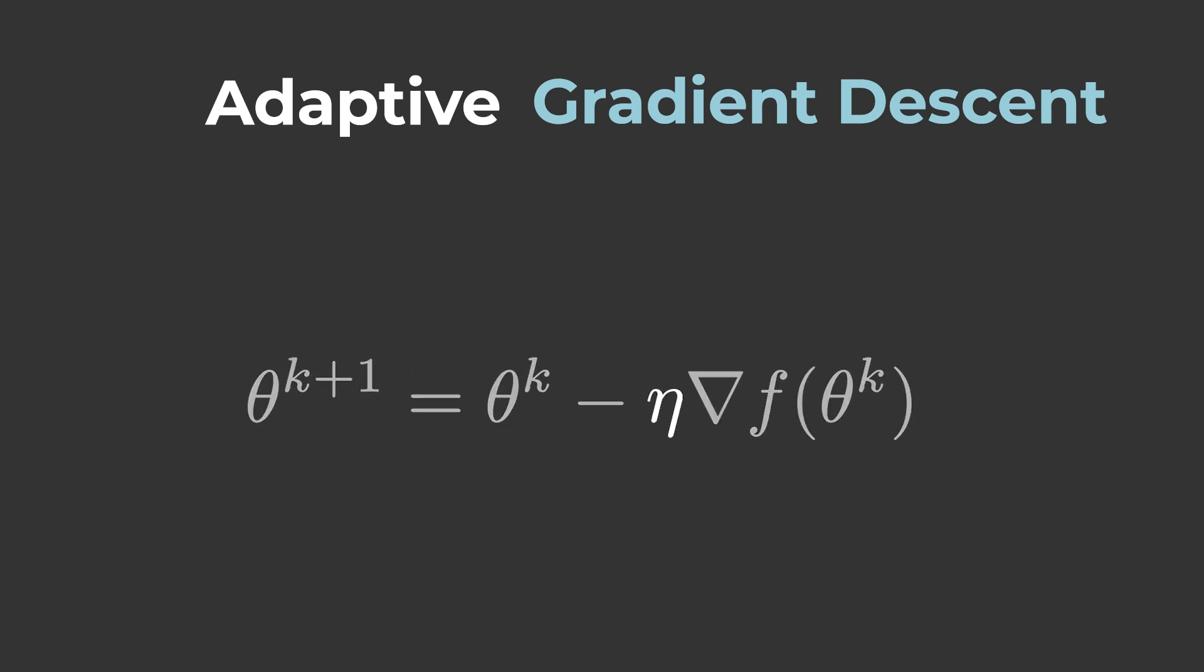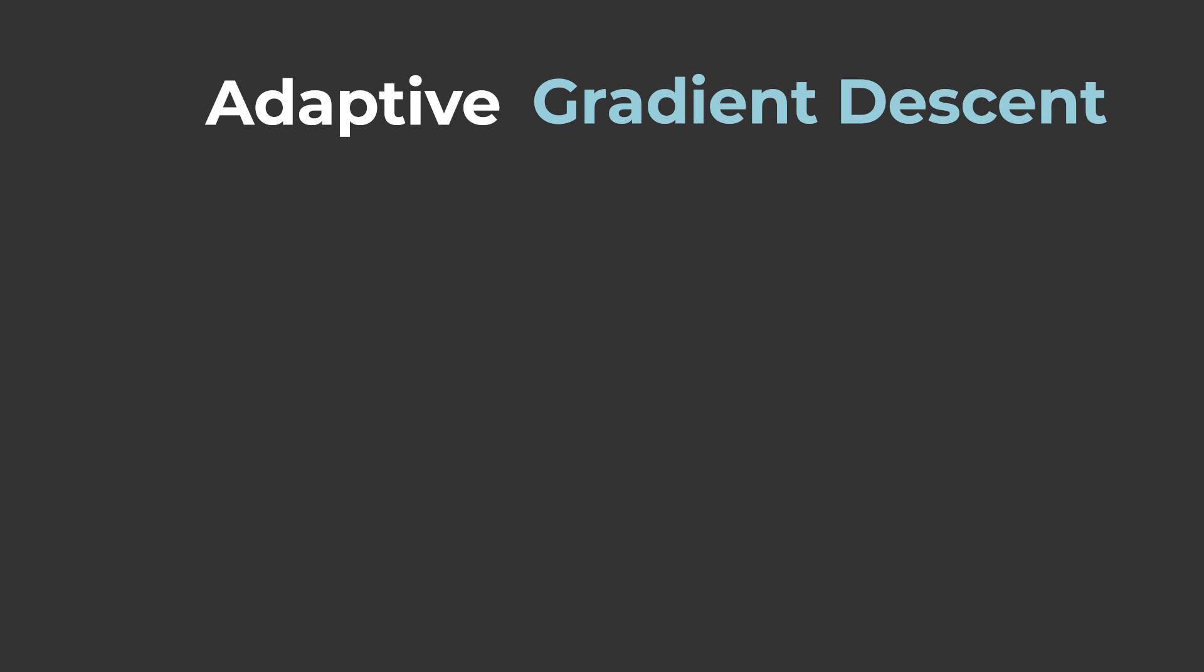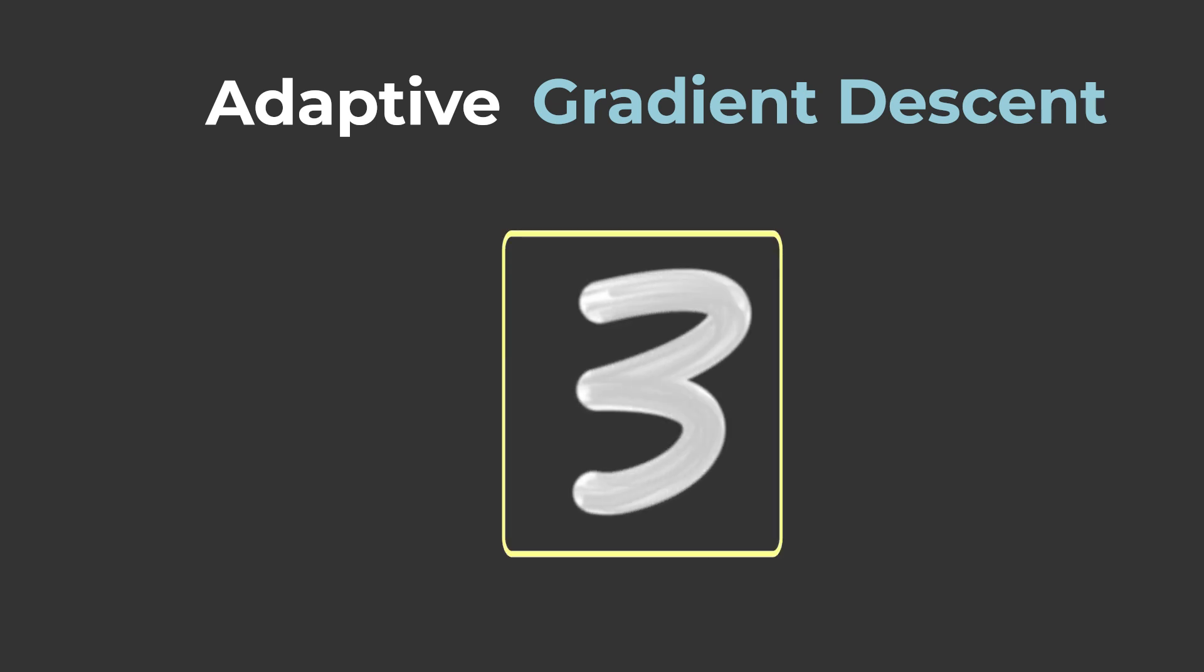Adaptive gradient descent picks a different step size for each component of theta. And this can be extremely useful when data is sparse, like text data and image data.